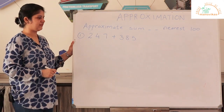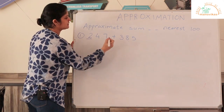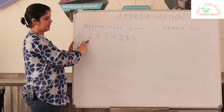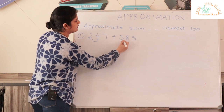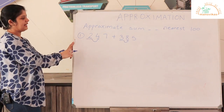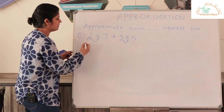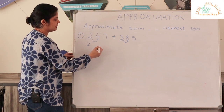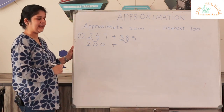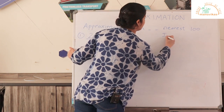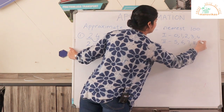The two numbers are 247 and 385. You have to get the approximate sum by rounding to the nearest hundred. So the digits in the hundreds place have to be underlined — here it is 2, and here it is 3. In the first number, the digit following 2 is 4. Four lies in the first range, so the digit in the hundreds place will not change — it remains as 2, followed by zeros: 200.